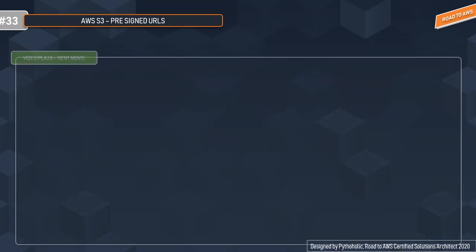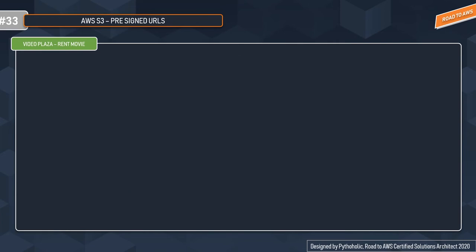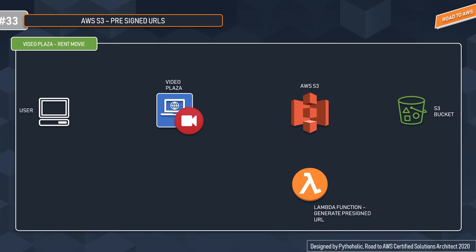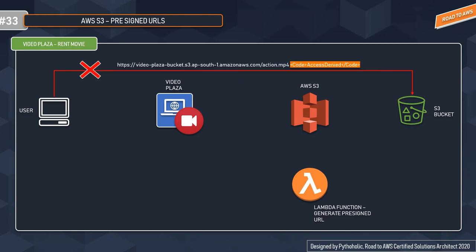Now let's look at the Video Plaza rent movie portal example. Suppose you are the user, and we have the Video Plaza server, an AWS S3 bucket, and a Lambda function. If you directly make a request for `action.mp4` from the bucket, you'll get an access denied error response because you're not authorized to access that particular file.